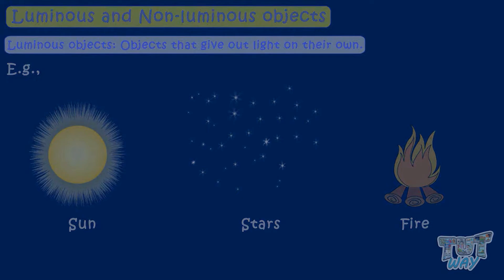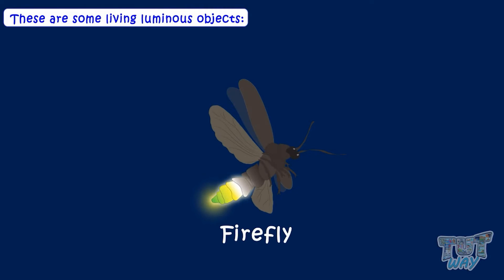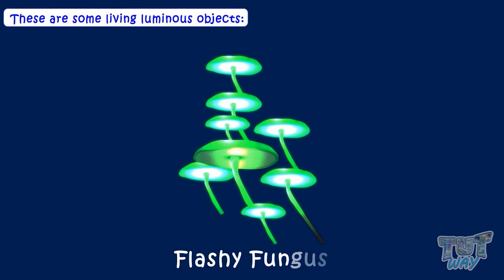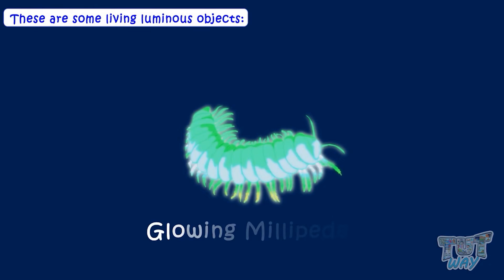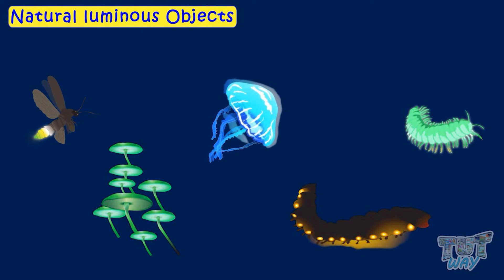Here are some examples of living luminous objects: fireflies, jellyfish, flashy fungus, radiant railroad worms, and glowing millipedes. These are natural luminous objects — they glow and emit light on their own.